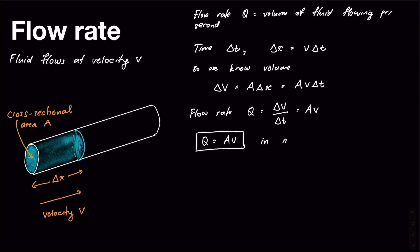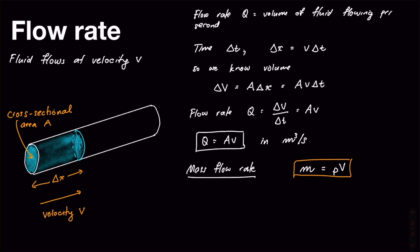The standard units for flow rate are cubic meters per second. If we have something in liters per second or liters per minute, we'll need to convert to SI units first. We also talk about mass flow rate — sometimes we'd rather know what mass of fluid has flowed rather than what volume. Since mass equals density rho times volume, the mass flow rate is rho times delta V over delta T, which is rho times AV, and that's in kilograms per second instead of cubic meters per second.